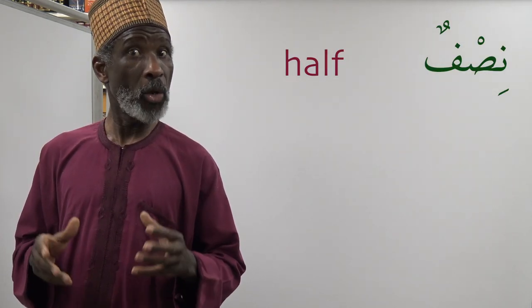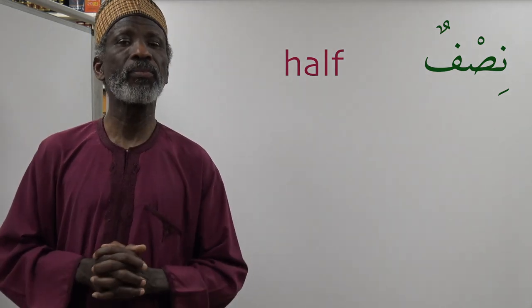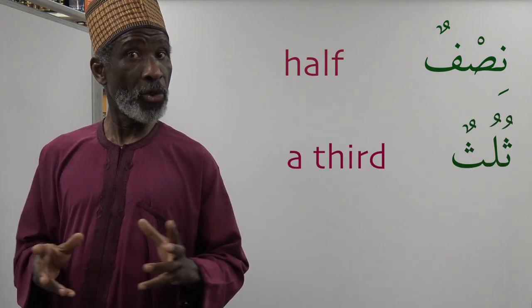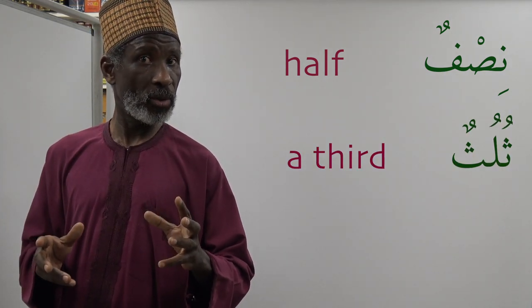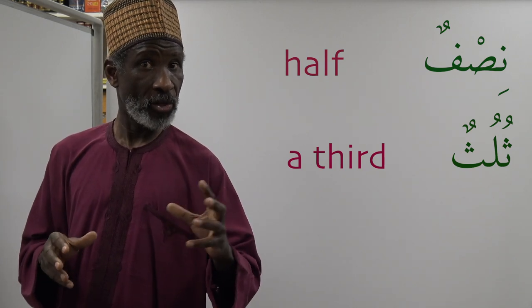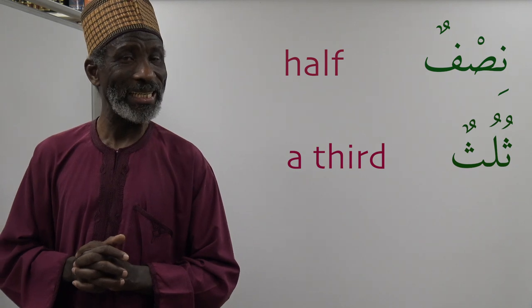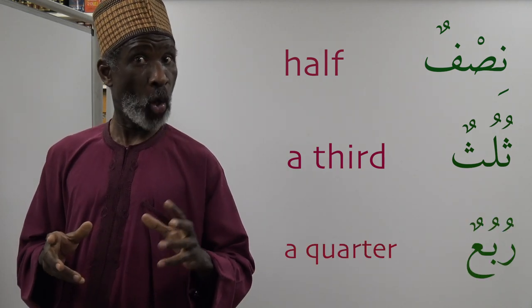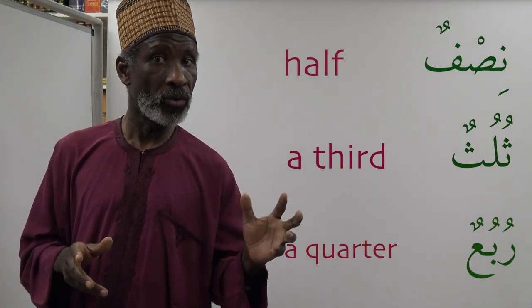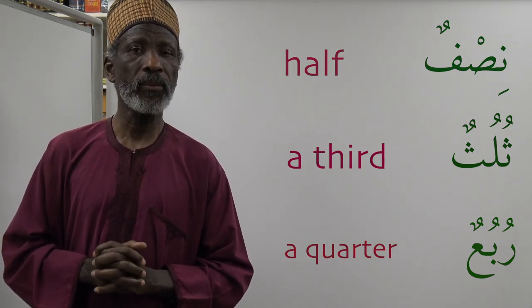Other relevant vocabulary: 'nisfun' means half. 'Thuluthun' means a third. And a quarter is 'rub'un' — or you may hear 'robo'un.' These fractions are important for telling time.